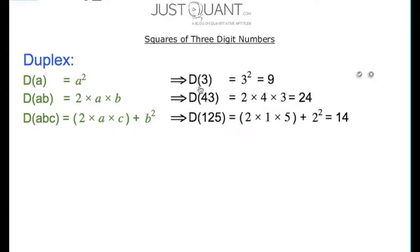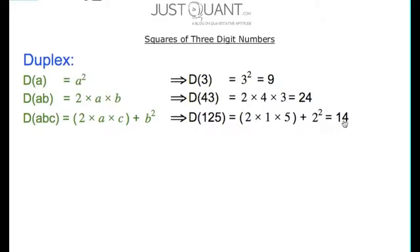For example, duplex of 3 is 3 squared, or 9. Duplex of 43 is 2 times 4 multiplied by 3, or 24. And duplex of 125 is 2 times 1 multiplied by 5 plus 2 squared, which is 14.